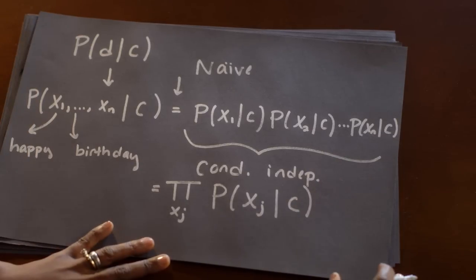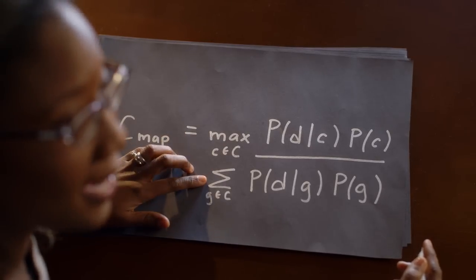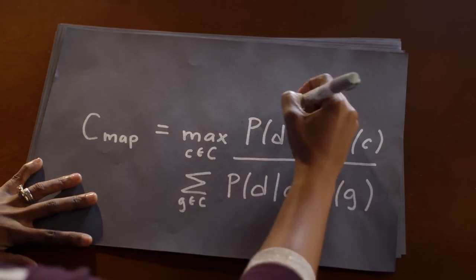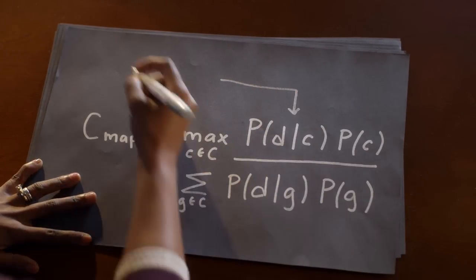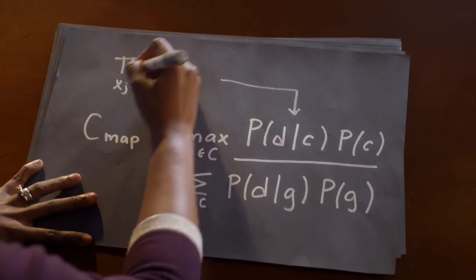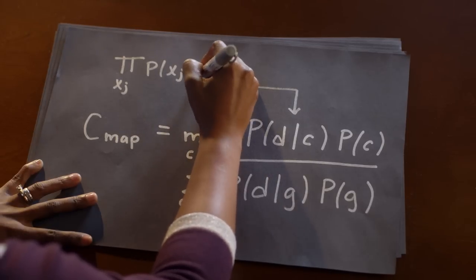For example, the probability that you see 'happy' given that you see 'birthday' is treated as independent. In real life this isn't the case — if you see the word 'birthday', you're more likely to see 'happy' in a message. But by implementing the naive assumption, we're actually able to greatly simplify our computation and still get solid results. So we can write this as the product over all X_j of the probability of X_j given the class. Plugging this back into our formula, we see that for C-MAP, the probability P(D|C) can be written as the product over all X_j of the probability of X_j given C, and that term also appears again in the denominator.